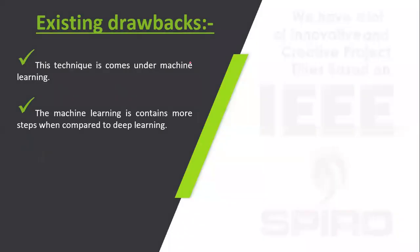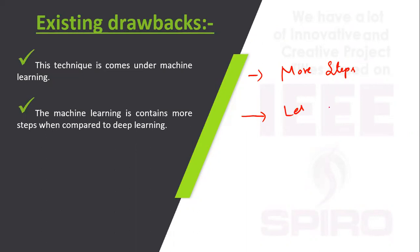If you use machine learning, it requires more steps to process, and it gives less accuracy.